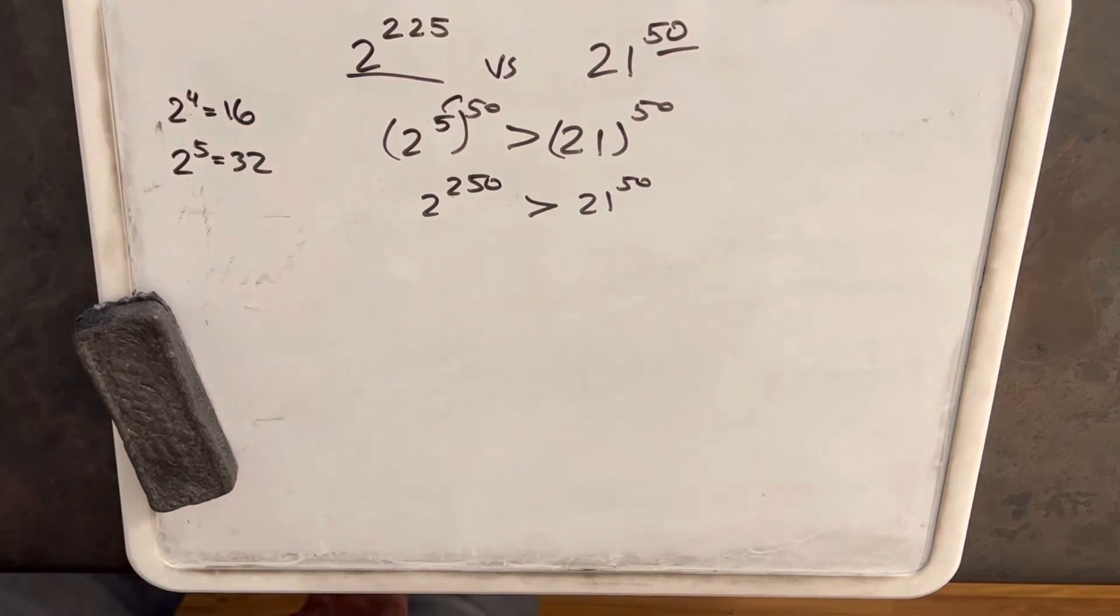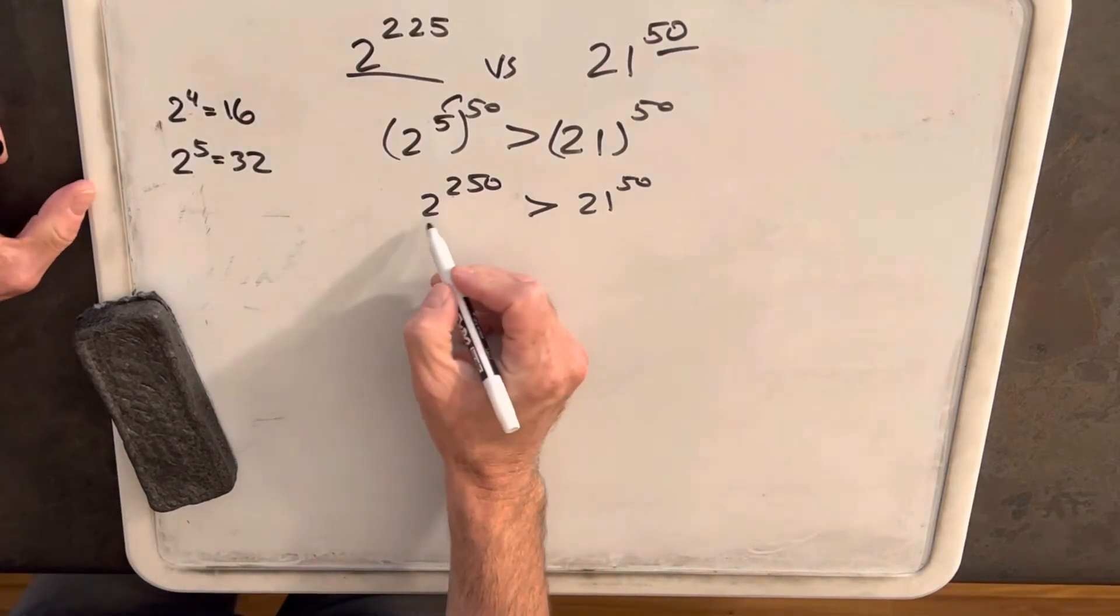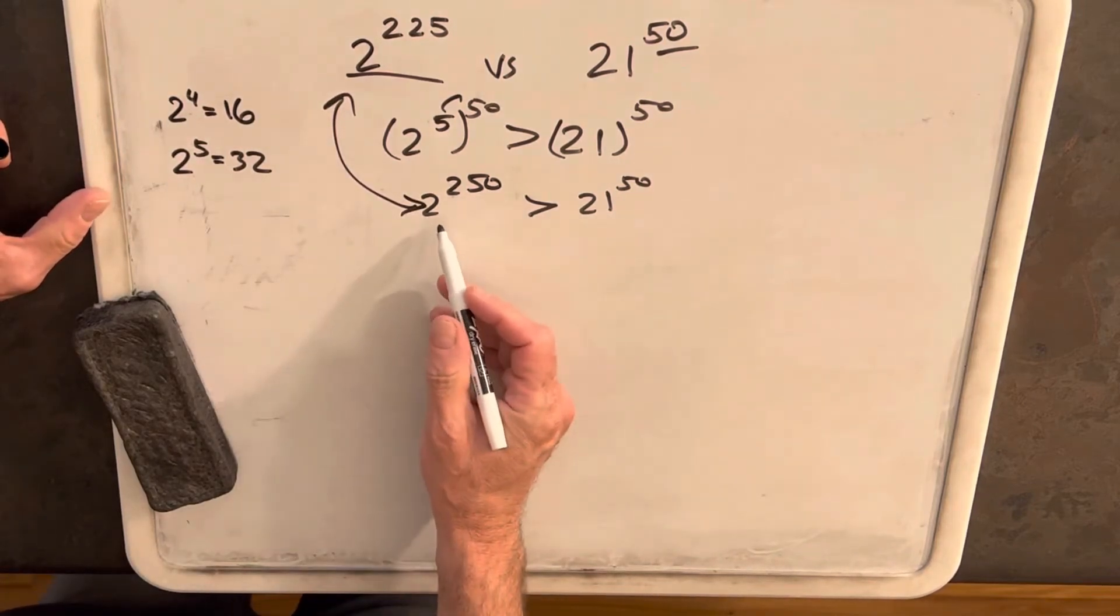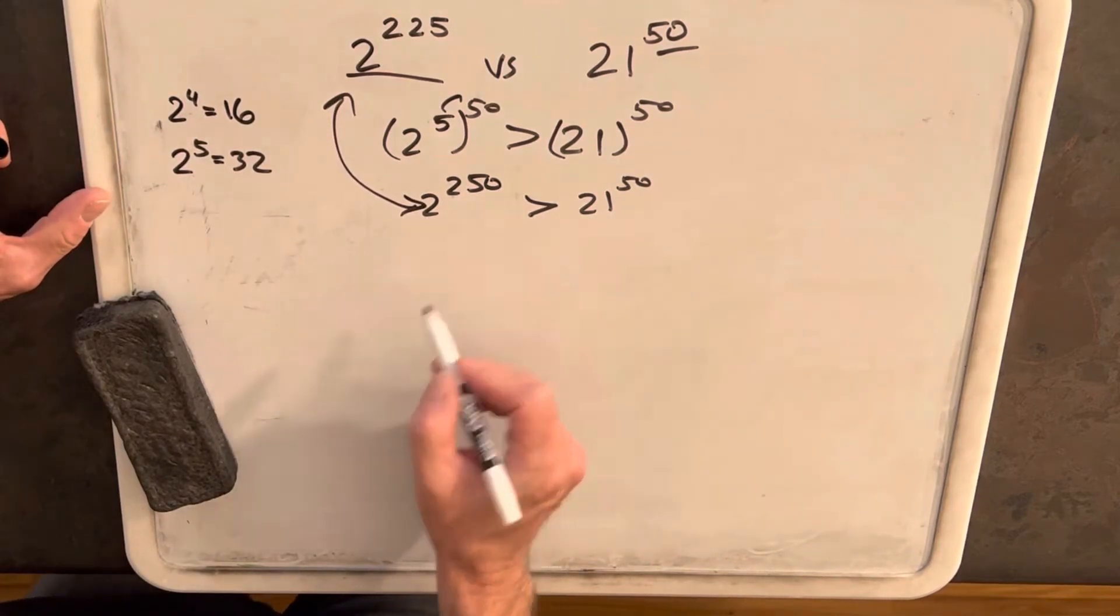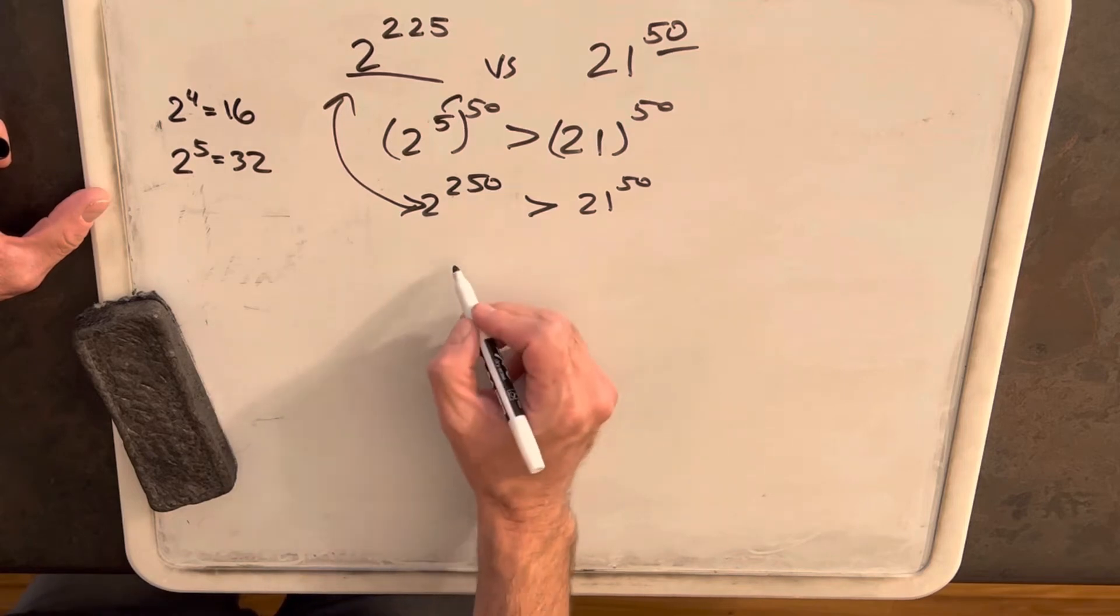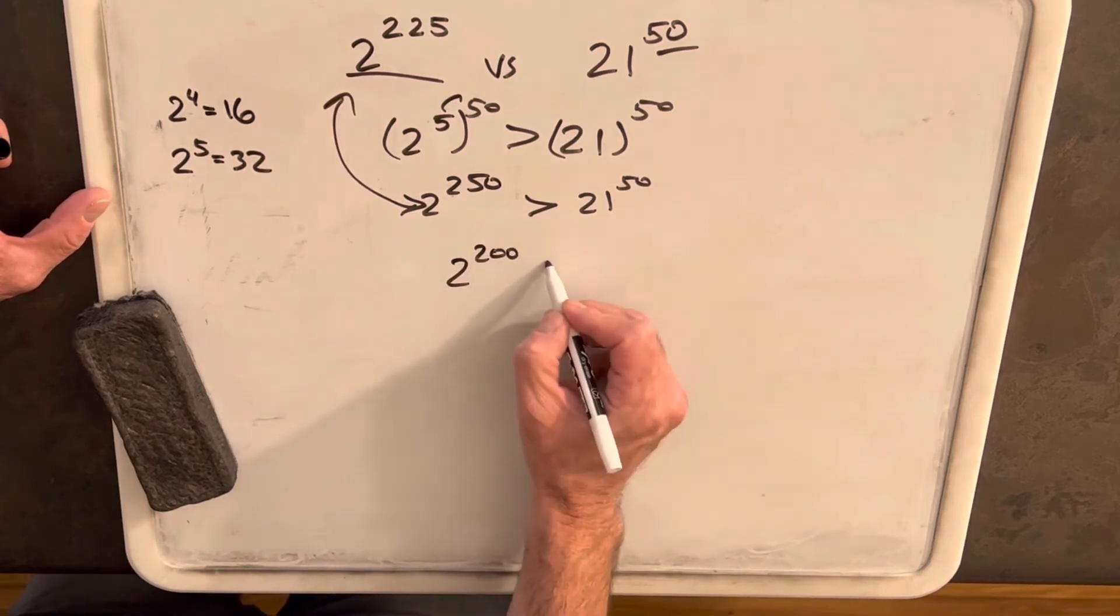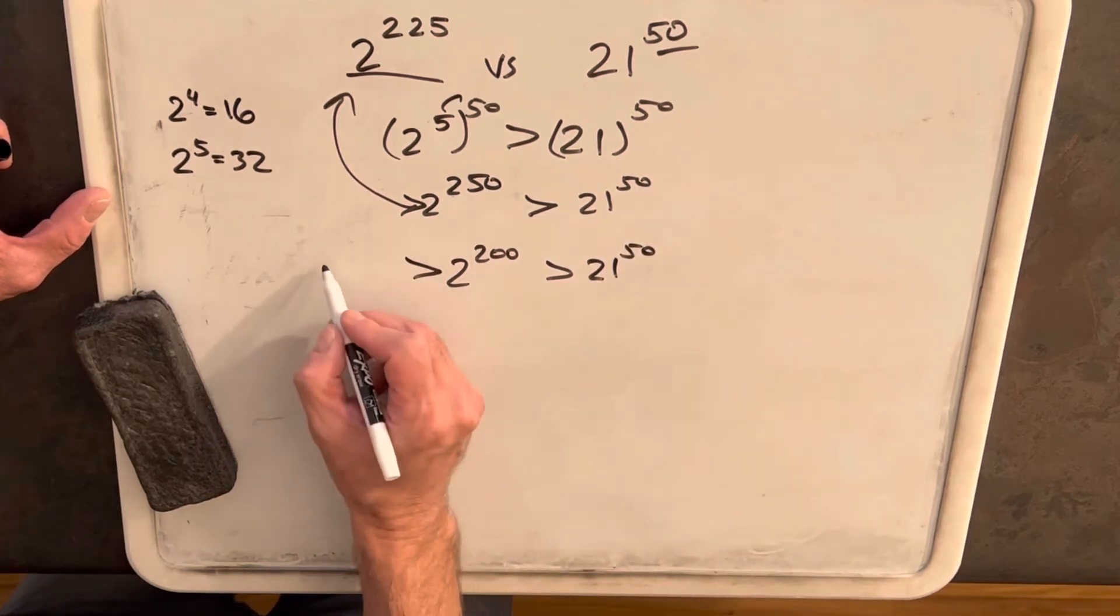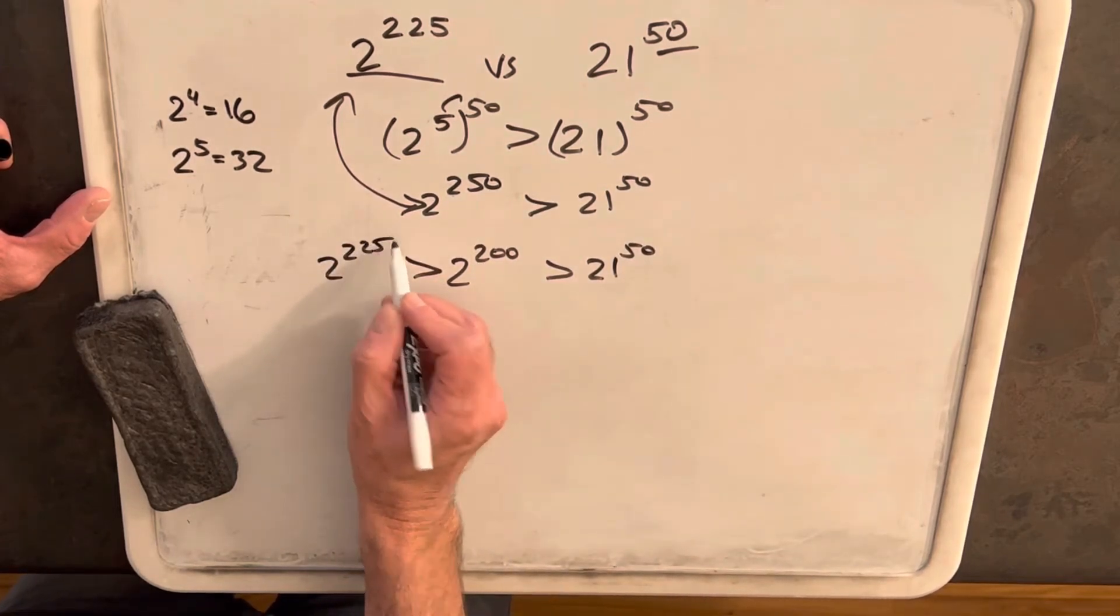Again though, that's a problem. We want this to not be the same as this. If we could say something like, if this was 2 to the 200, we'd be all set because that's less than 2 to the 225th.